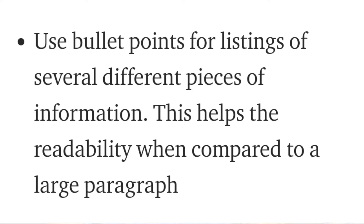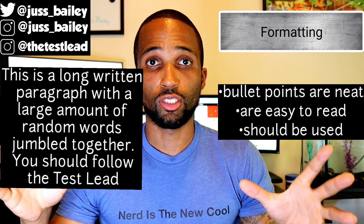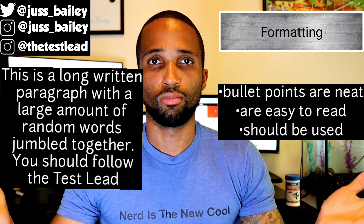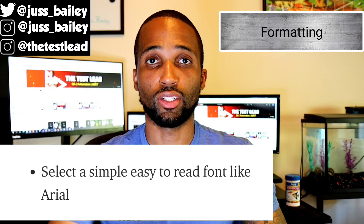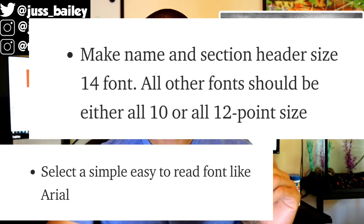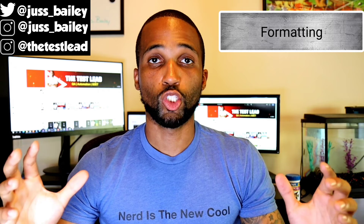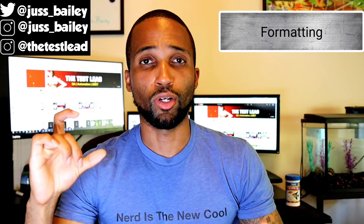For formatting there are some high-level standards you should follow. First, use bullet points for listings of several different pieces of information — this helps readability compared to a large paragraph. Next, select a simple and easy-to-read font such as Arial. Make the name and section header size 14 font; all other text should be either 10 or 12 point. To emphasize the most important parts use a slightly bigger font, everything else in 10 point. Finally, margins should be about 1 inch.